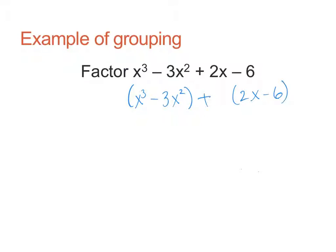Now, I notice that each of my groups does have a common factor to distribute out. So my first group, I can distribute out an x squared, and I have, and I'm going to write this in red, x minus 3. And my next group, I have a common factor of 2, and so I have x minus 3.